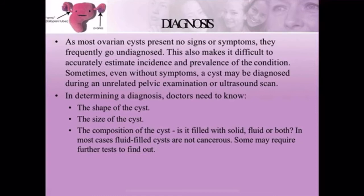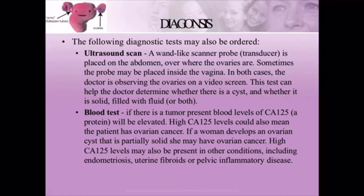Fluid-filled cysts are generally non-cancerous. An ultrasound scan can clearly show whether the cyst is of benign or malignant nature, and whether it is filled with solid or fluid material. A vein-like scanner probe and transducer is placed on the abdomen over where the ovaries are. Sometimes the probe may be placed inside the vagina — transvaginal ultrasound. In both cases, the doctor observes the ovaries on a video screen. Two techniques are used in ultrasonography: transvaginal and transabdominal.